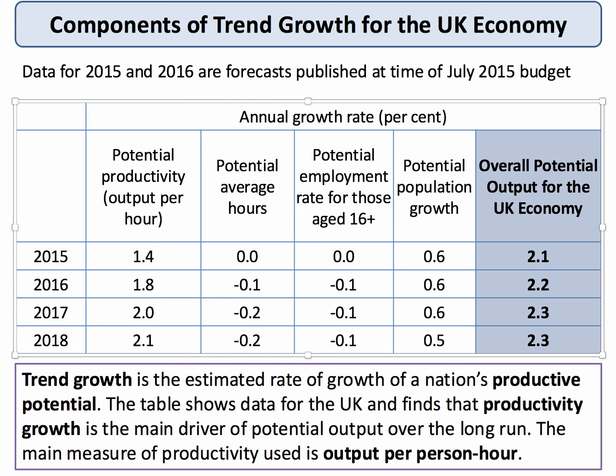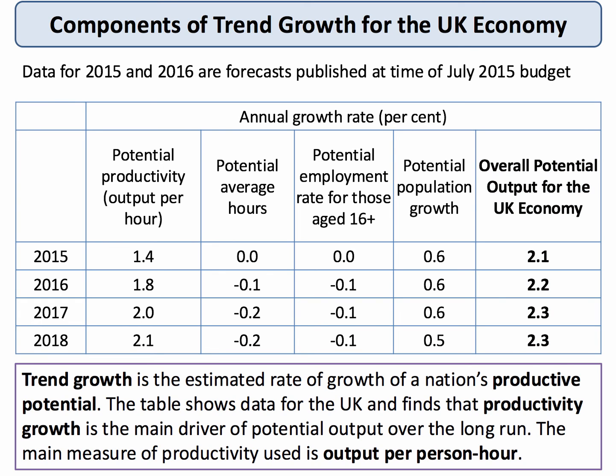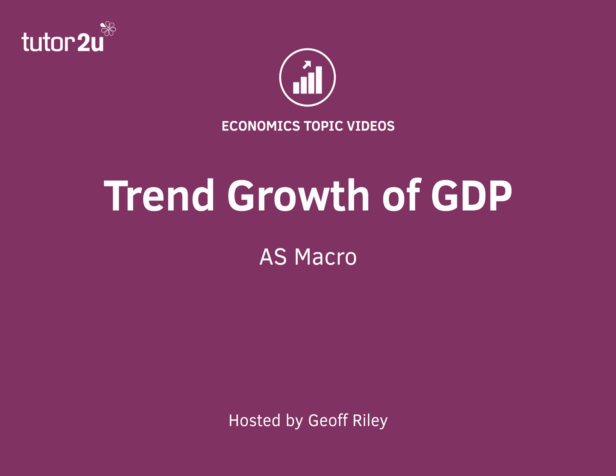The forecast at the time of the last budget — this is from the Treasury — is that Britain's potential growth rate is going to nudge a little higher from just over 2% towards 2.3%. That may not be very much in percentage terms, but it's a sign that the British economy might be increasing its trend growth just a little bit. The biggest single driver of trend growth is productivity, so if you get a question on productivity, it is a massively important topic for the trend growth of GDP.